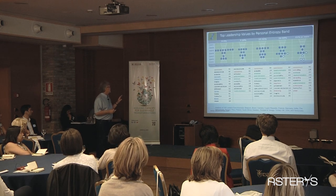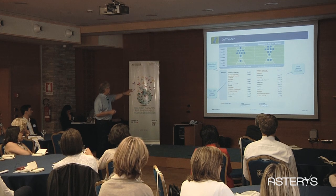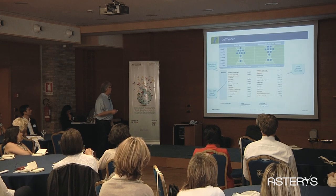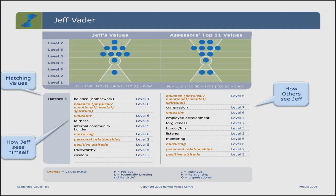Here's an example of a leadership values plot. As a leader you go online and pick 10 values about who you are, your strengths, what you need to work on. Then you invite 15 colleagues to do the same — a 360 assessment. Here are results for three partners: Jeff Vader has a high set of values, and the people he works with see him in pretty much the same way — five matching values between his self-assessment and his assessors.